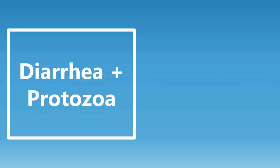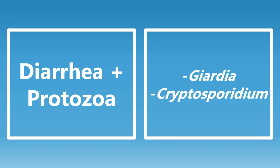Diarrhea plus a protozoa — there are really two main organisms you need to know here. It's going to be Giardia, or Giardiasis, which most of us know. But the less common one you also need to have in mind is Cryptosporidium, if you see diarrhea and a protozoal organism.